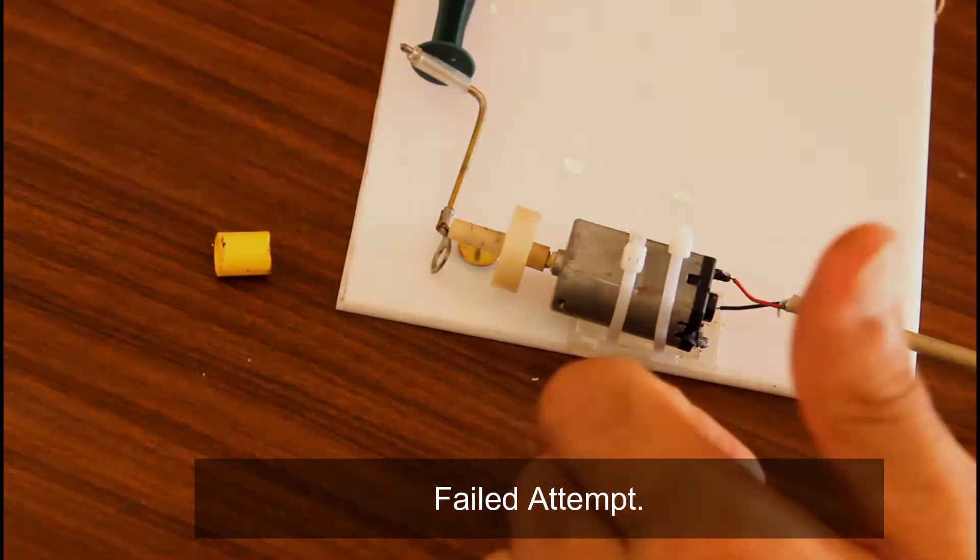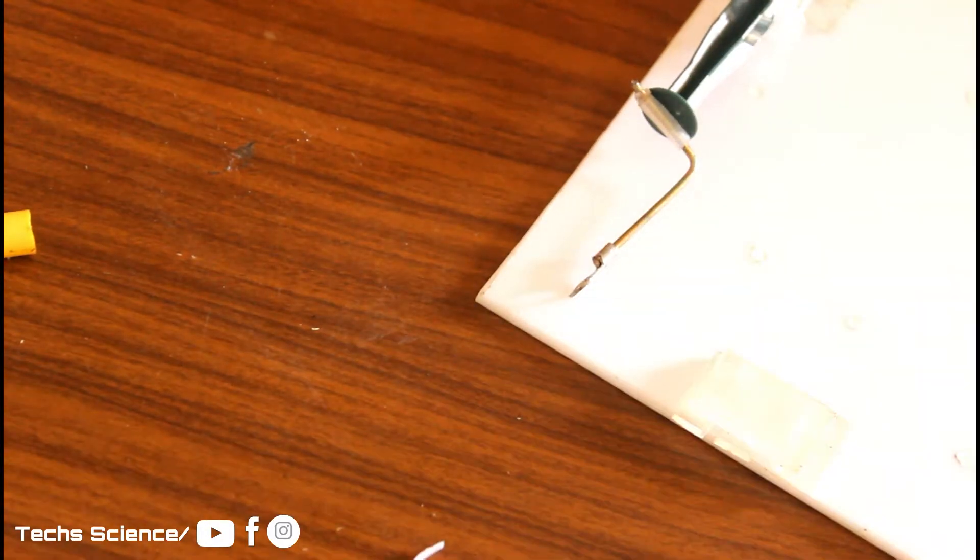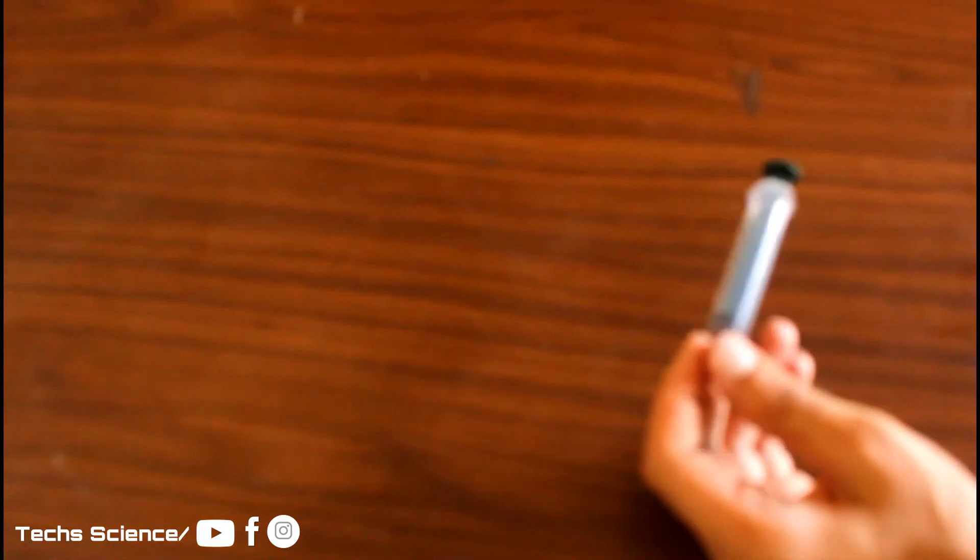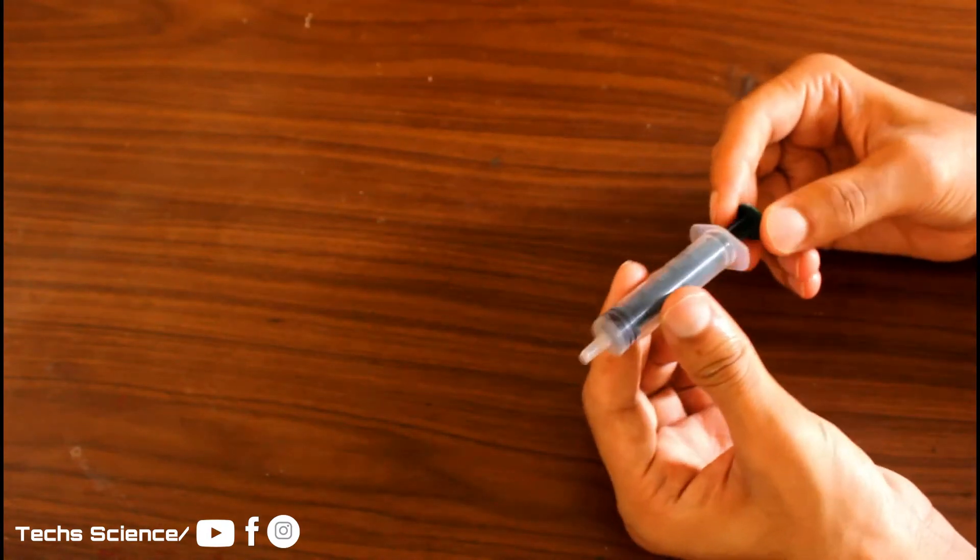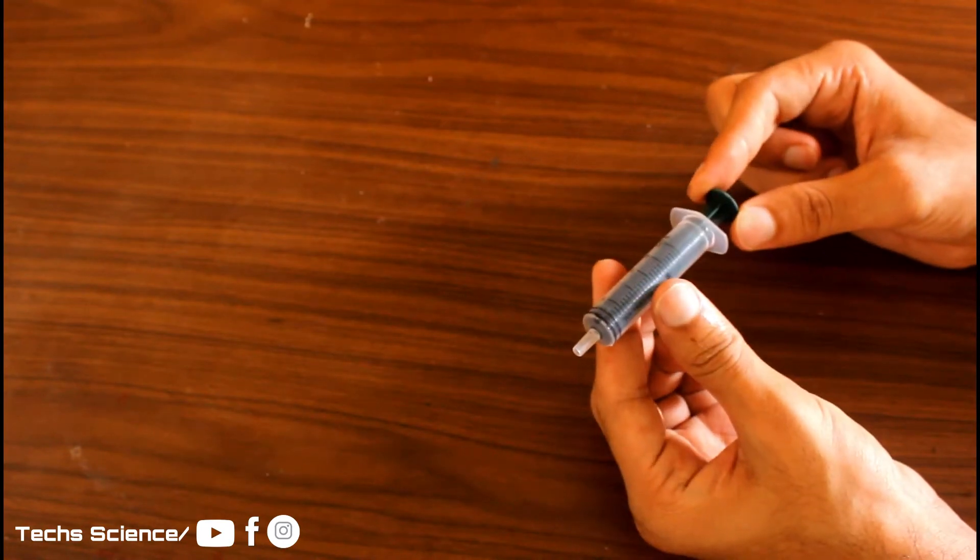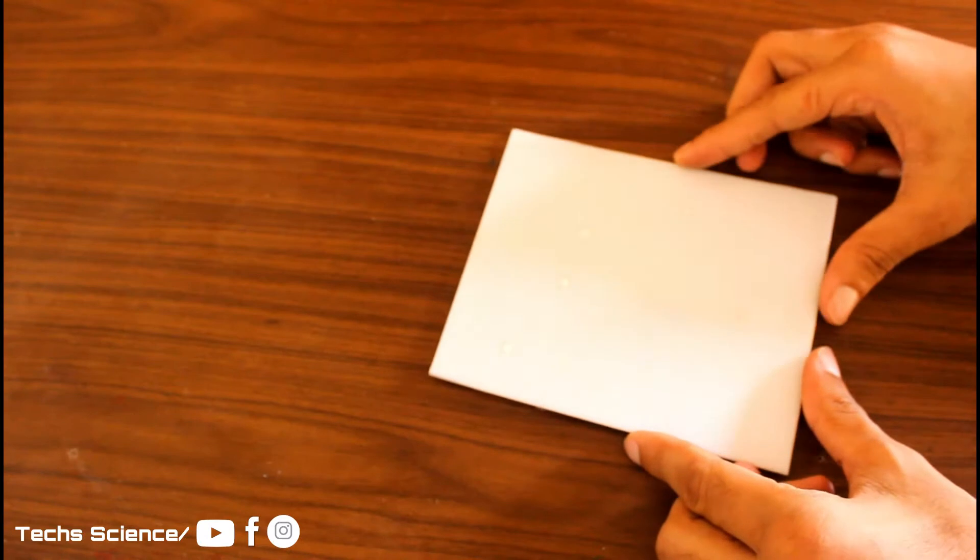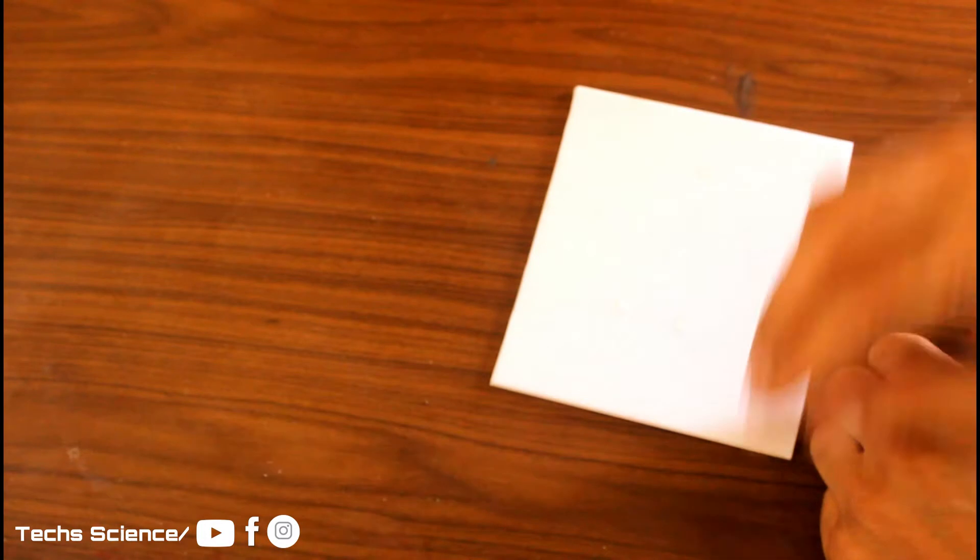So this project took me around three days to make it working as I was experimenting with simple DC motors and different mechanisms. Here I am having this syringe - it can be of any size. The larger the size, the more air it will pump. And for the base I am using this acrylic sheet.